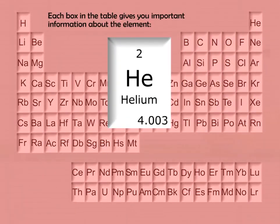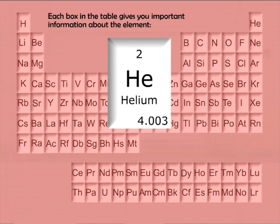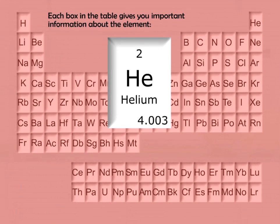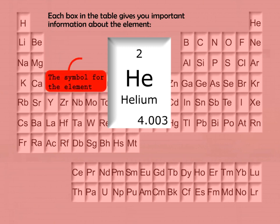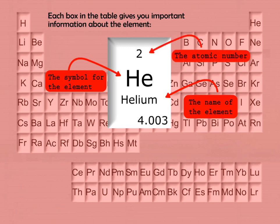Each box in the table gives you important information about the element: the symbol for the element, the name of the element, the atomic number, and the atomic weight.